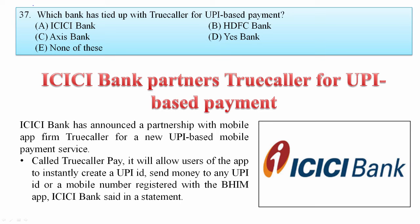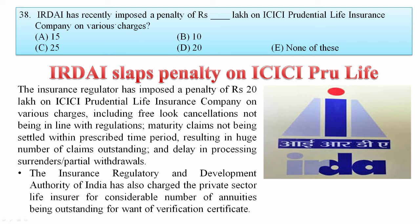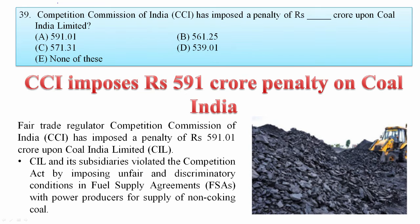Which bank tied up with Truecaller for UPI-based payments? ICICI Bank partnered with Truecaller for UPI-based payments. Your answer is A. IRDAI recently imposed a penalty of 20 lakh rupees on ICICI Prudential Life Insurance Company on various charges including free-look cancellation not being in line with regulations, maturity claims not settled within prescribed time periods, and delays in processing surrenders. Your answer is D. IRDAI stands for Insurance Regulatory and Development Authority of India.